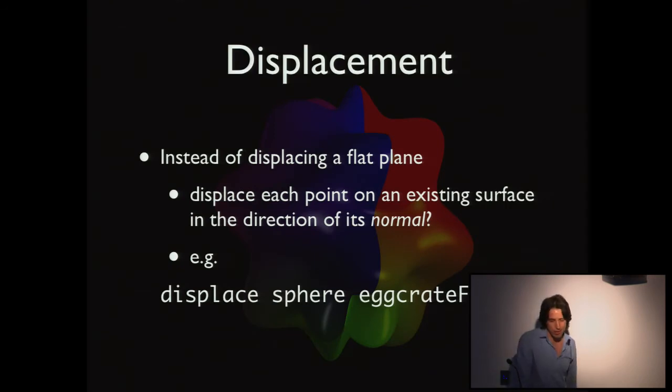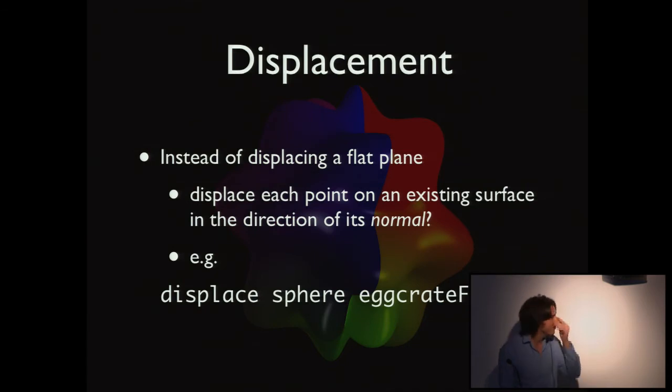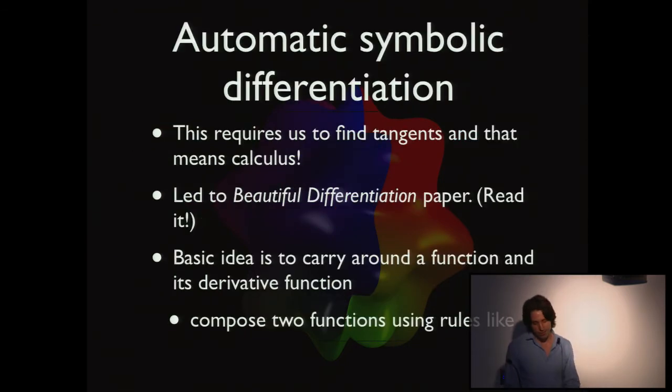Another concept we might want to look at is displacement. This is how I produce the thing that you see sitting there in the background. Instead of displacing a flat plane to create a height field, what if we displace each point on an existing surface in the direction of its normal? What if we displaced a sphere by the egg crate? You basically get the thing that's sitting in the background there.